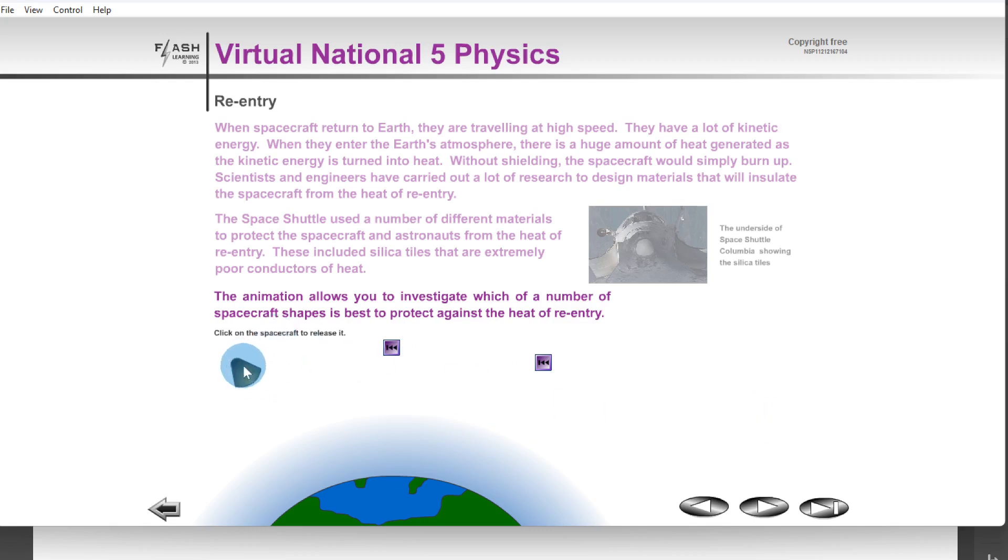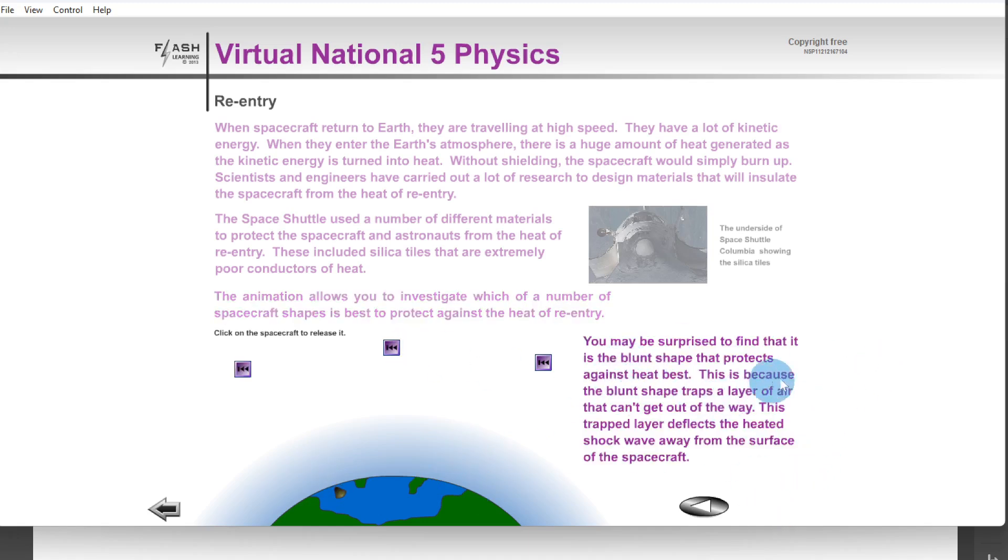And lastly, we have this kind of rounded cone-shaped one here, and you'll see it doesn't actually burn up as much as the other two on re-entry. The reason for that is you may be surprised to find that it is the blunt shape that protects against heat best.